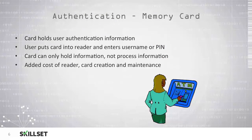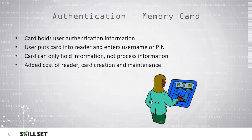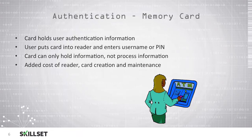Another device that can be used is a memory card — a card that holds the user's authentication information. The user can swipe their card or put it into a reader, then enter a PIN number or username to prove they are the authorized holder of that device. Memory cards only hold information; they are not able to process information. There is also the added cost of the reader, creating the devices, and maintaining them. A common example is your ATM card, which you insert into an ATM machine, enter your PIN, and then withdraw funds from your bank account.